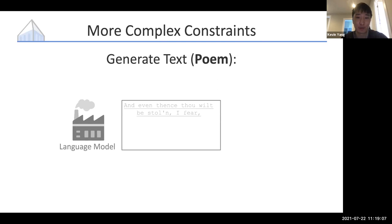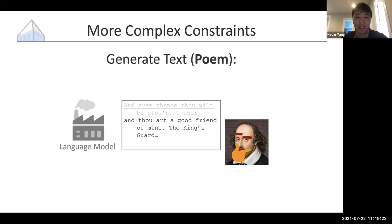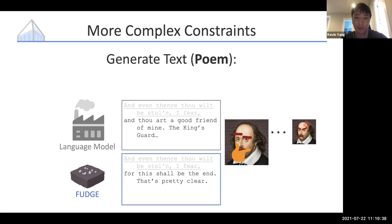One example of a difficult constraint is poetry. Let's see what a language model says when given the beginning of one of Shakespeare's sonnets. The result is terrible — it doesn't roll off the tongue, doesn't rhyme, doesn't even end the sentence properly. The only good quality is that it kind of looks like Shakespeare in English. Shakespeare would hate every last one. But if you ask FUDGE, you get something like: 'And even thence that will be stolen I fear, or this shall be the end.' It's not Shakespeare, but it gets the meter and rhythm right, it rhymes, and it ends the sentence in about the right place. So overall, it's not too bad.